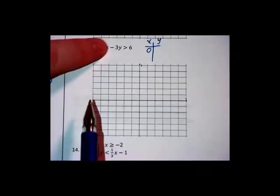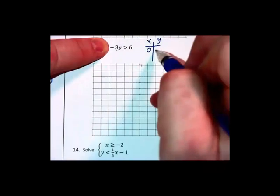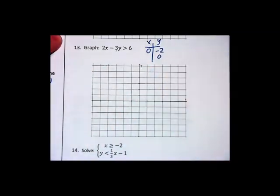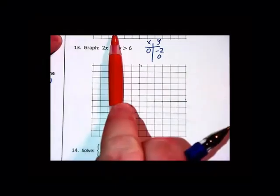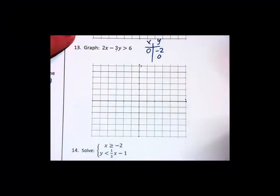When I substitute in 0 for x, that disappears. Dividing each side by negative 3 gives us negative 2 on the right. When we substitute 0 in for y, the 3y disappears. I've got 2x equals 6. Dividing each side by 2 gives us x equals 3.